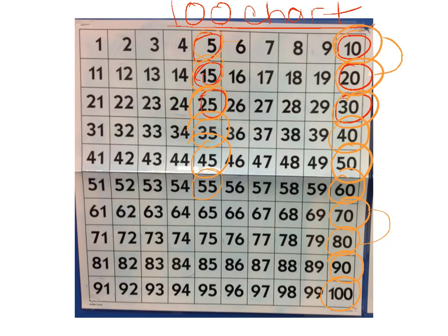So when they're skip counting 45, 55, 65, 75, 85, 95, those are the different skills and strategies that we use. They can skip count by two.